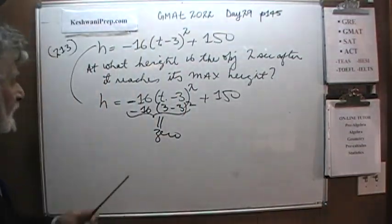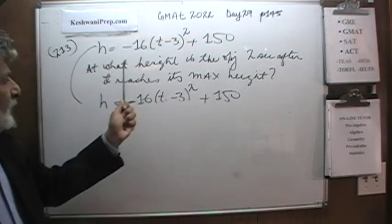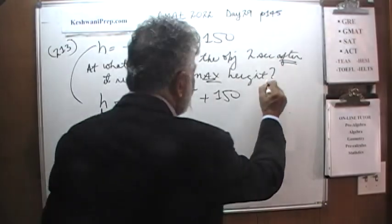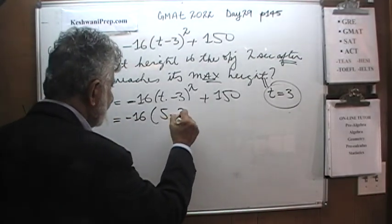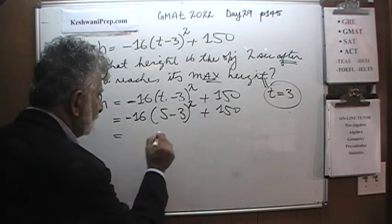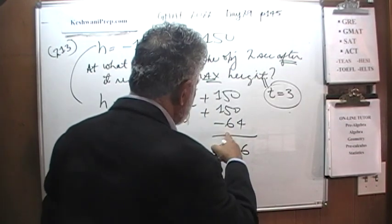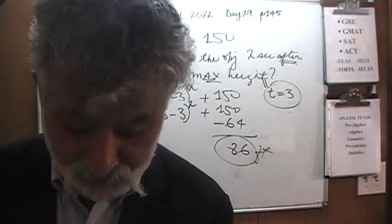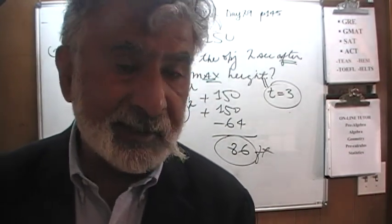All we have to do is substitute T = 5: H = −16(5 − 3)² + 150 = −16(4) + 150 = −64 + 150 = 86 feet. So the object is at a height of 86 feet, 5 seconds after it has been released. For reference, 3 seconds after release it is at its maximum height of 150.